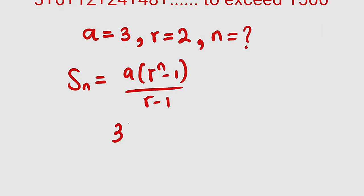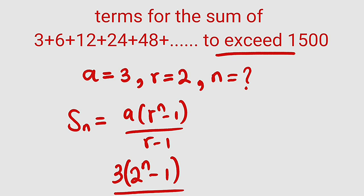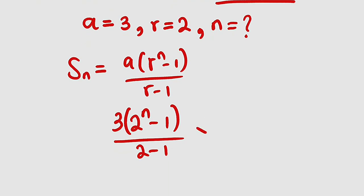a is 3, r is 2 to the power of n minus 1, divided by r is 2 minus 1. But according to the question, it stated exceed, meaning we are going to use greater than sign, greater than 1500.